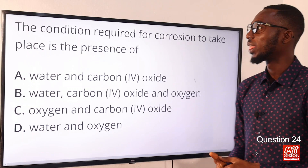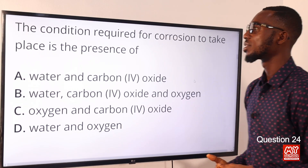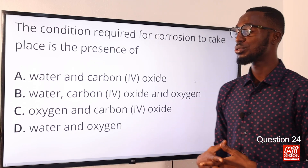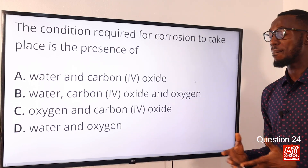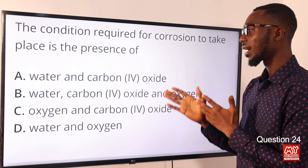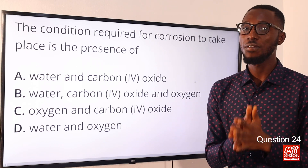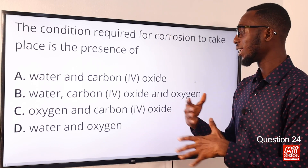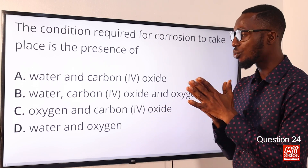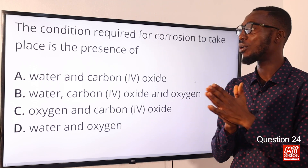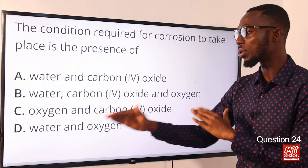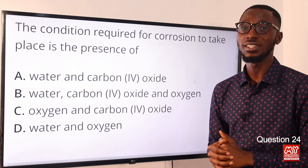Question 24: The condition required for corrosion to take place is the presence of what? Corrosion results from the combined action of water and oxygen, though it is accelerated by carbon dioxide (CO₂) and gaseous pollutants like sulfur dioxide (SO₂). The accelerators are CO₂ and SO₂, but corrosion basically occurs due to the combined action of water and oxygen. Option D is the correct answer.